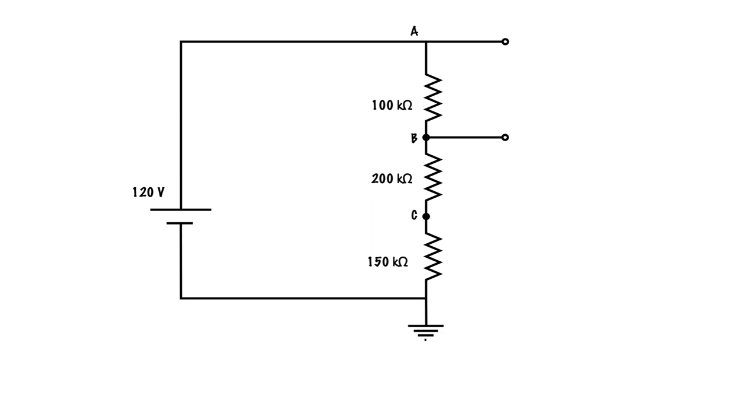Next up, what we need to do is to determine what our total circuit resistance is. Before it was 600k ohms. Now we're going to go 100k ohms plus 200k ohms, which is 300k ohms, plus 150k ohms gives us 450k ohms. Previously, with no load on the circuit, it was 600k ohms. That is extremely important.